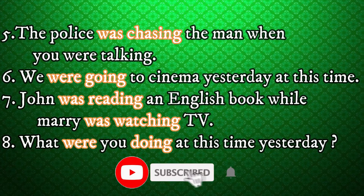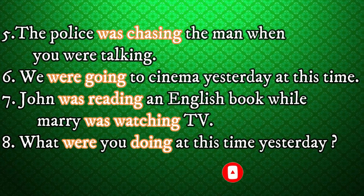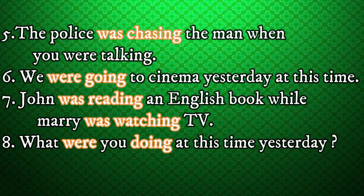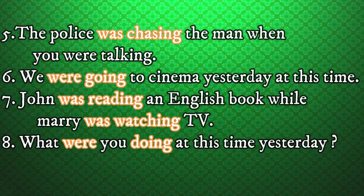To sum up: present continuous tense and past continuous tense have the same sentence structure. In present continuous tense, we use subject + is/am/are + first form of verb with -ing. Is is used with singular, am with I, and are with plural. In past continuous tense, we use was or were with the first form of verb plus -ing — was for singular and were for plural. Students, this is all about the topic. I hope you enjoyed it. You can do practice and learn more and more. Thank you very much. Happy learning!